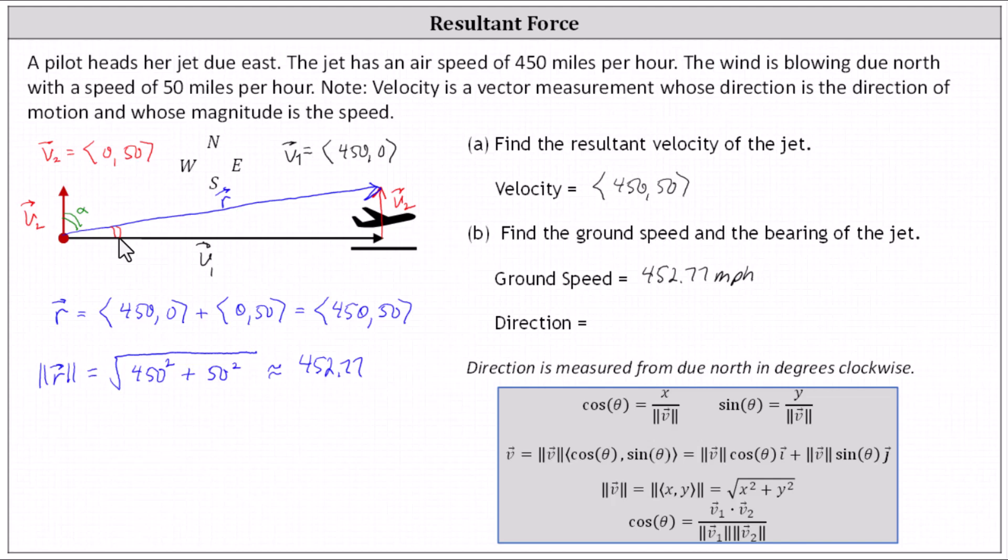So let's go ahead and take that approach. Because we have a right triangle here, and we know vector v sub one has a magnitude of 450, we can label this leg of the right triangle 450. And because we know the magnitude of vector v sub two is 50, we can label this leg 50. In relation to this angle here, we'll call it angle beta.